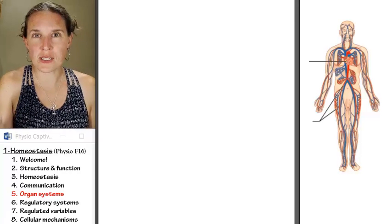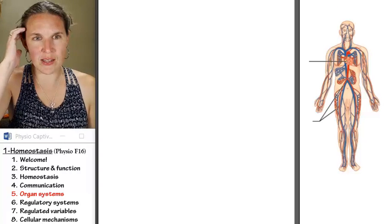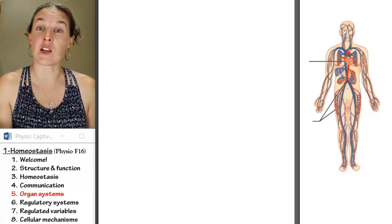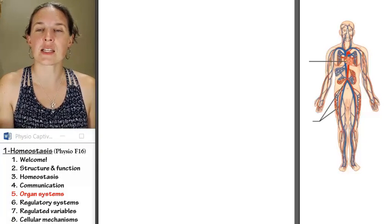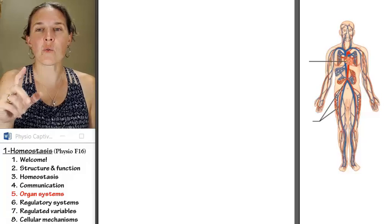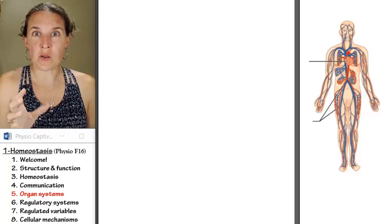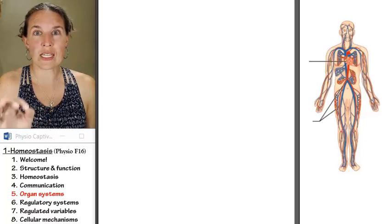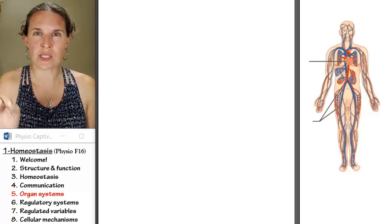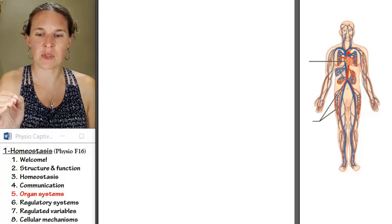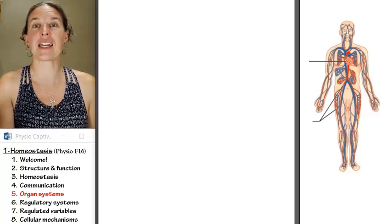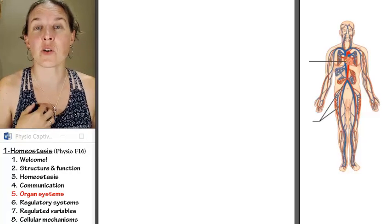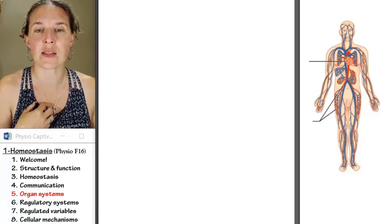Organ systems work together to maintain homeostasis. We're going to talk about the role each organ system plays in the maintenance of homeostasis.